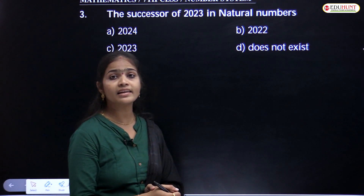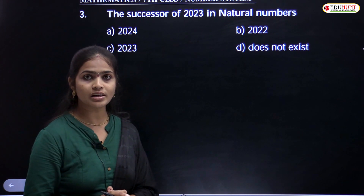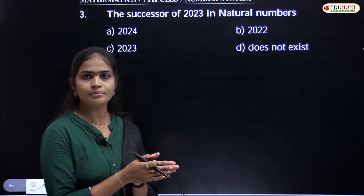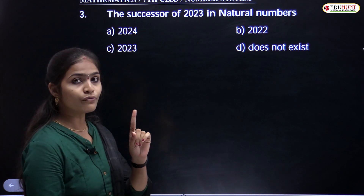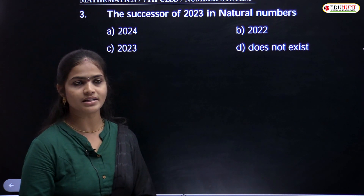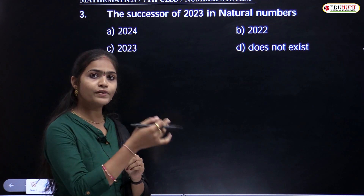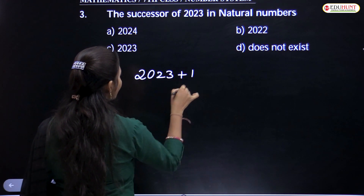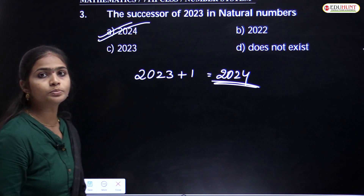The successor of 2023 in natural numbers. Every natural number has its successor. Only one natural number does not have a predecessor — that is 1. But every natural number has a successor. To find the successor, add 1 to the given number. So 2023 plus 1 equals 2024. The answer is 2024 — option A is correct. You have to observe whether they are asking successor or predecessor.